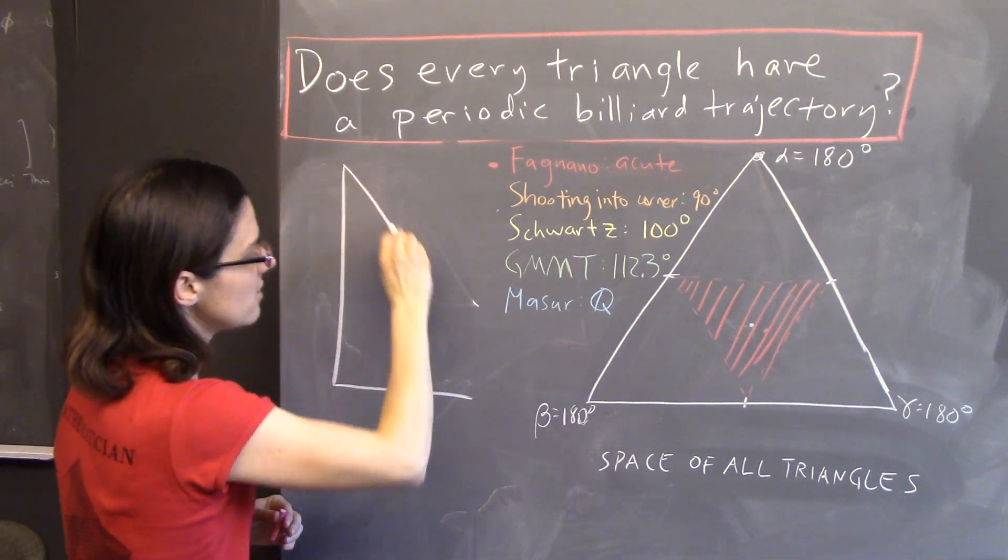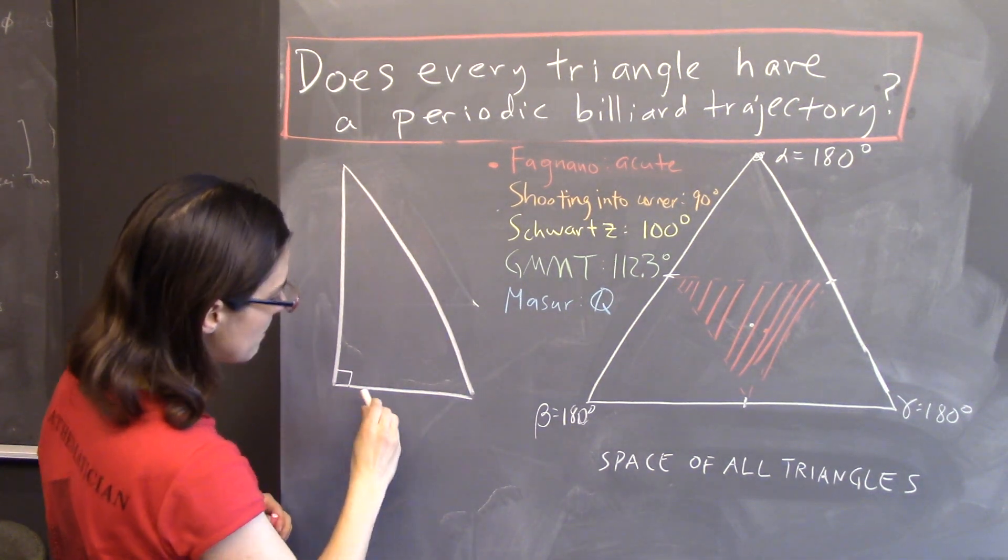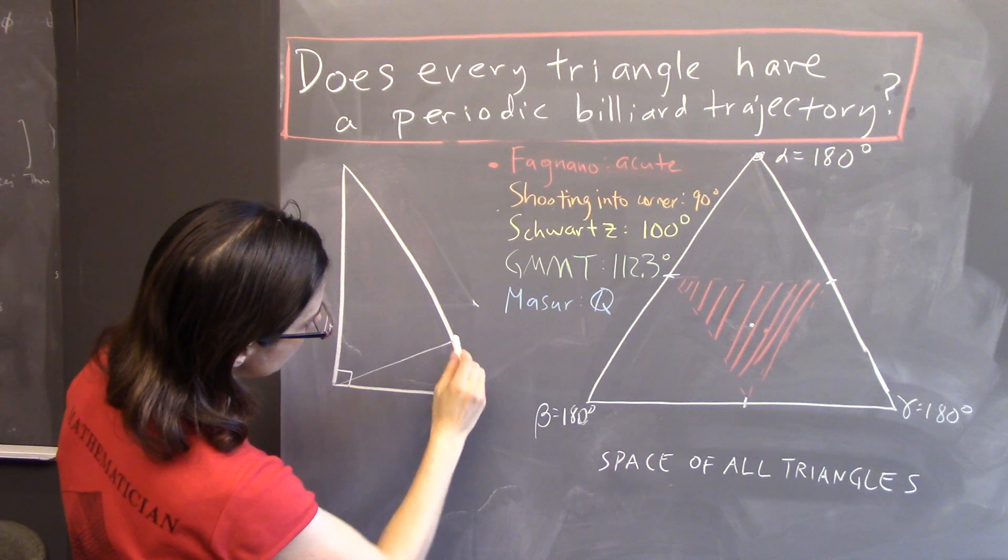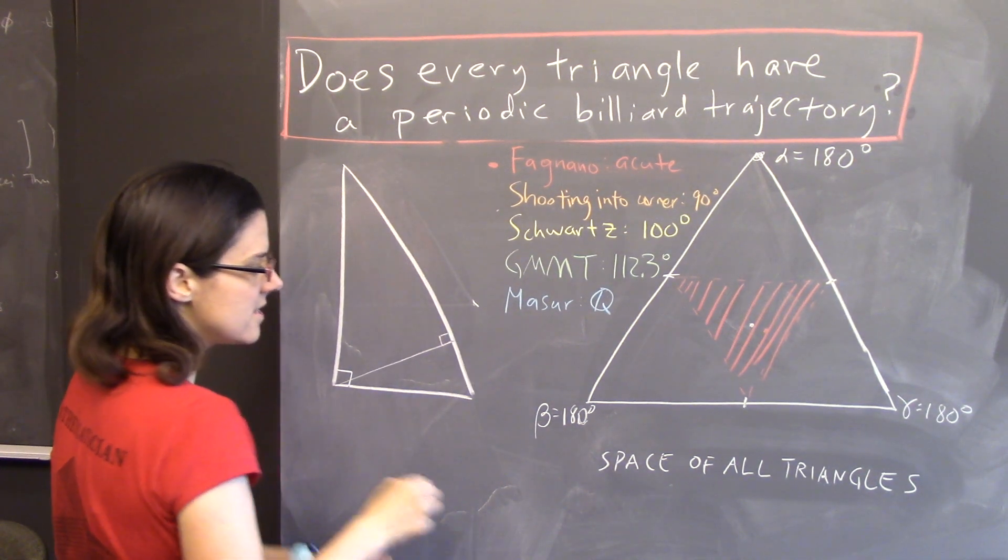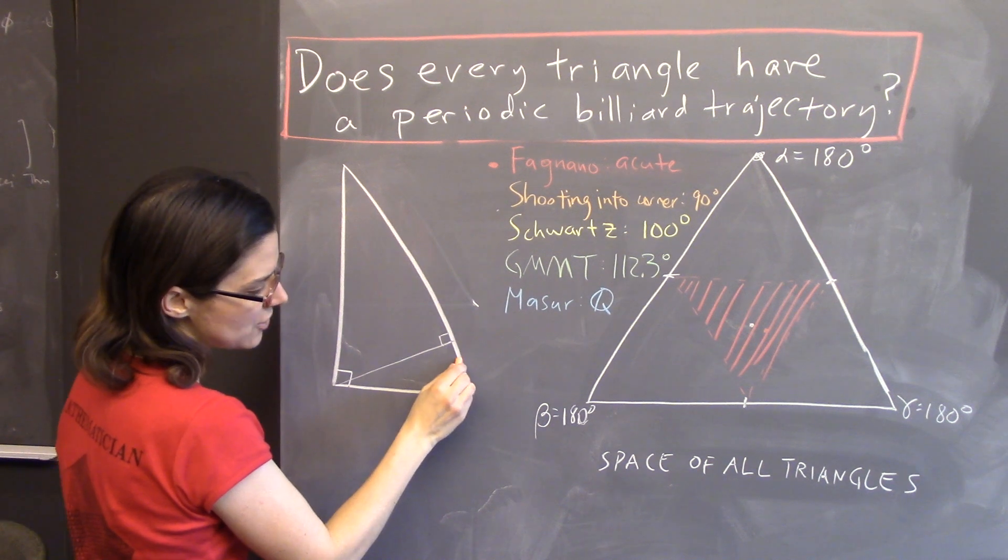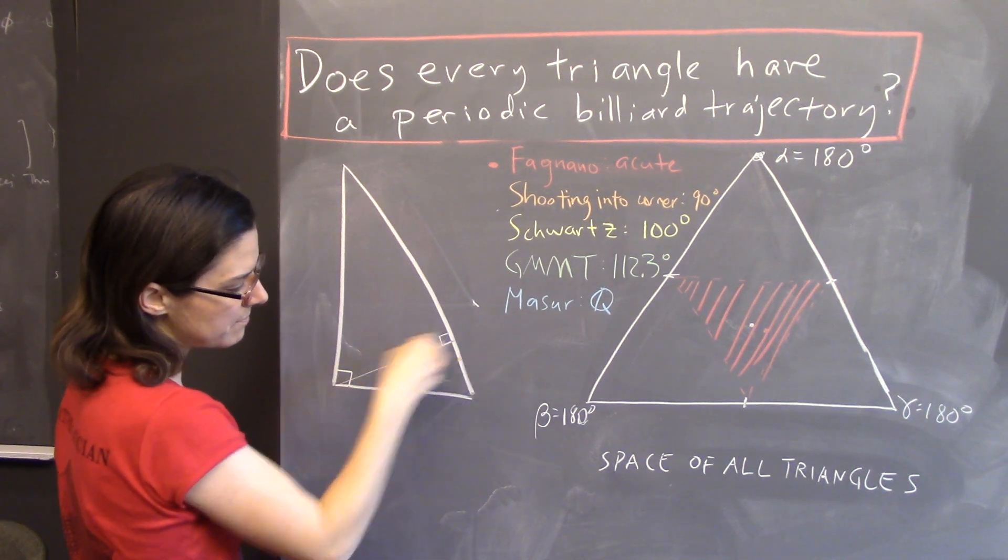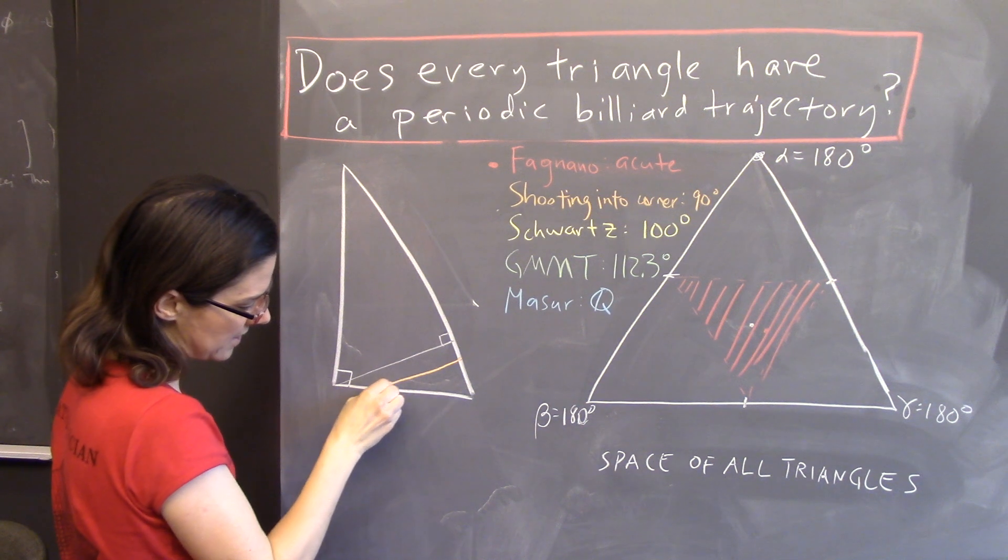So, here's a right triangle. Let's drop the altitude to the hypotenuse. And now, if you sit right here, near the foot of the altitude, and you shoot towards the corner, parallel to the altitude, check out what happens.